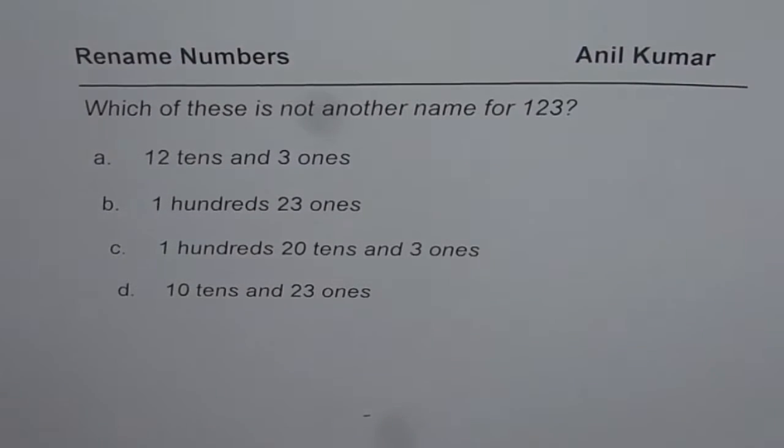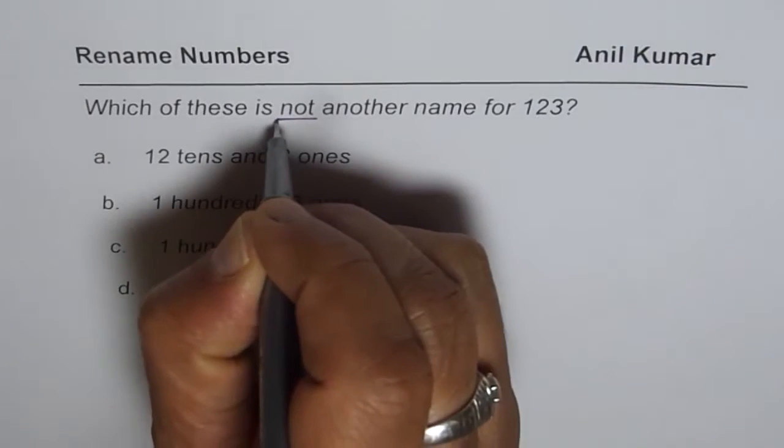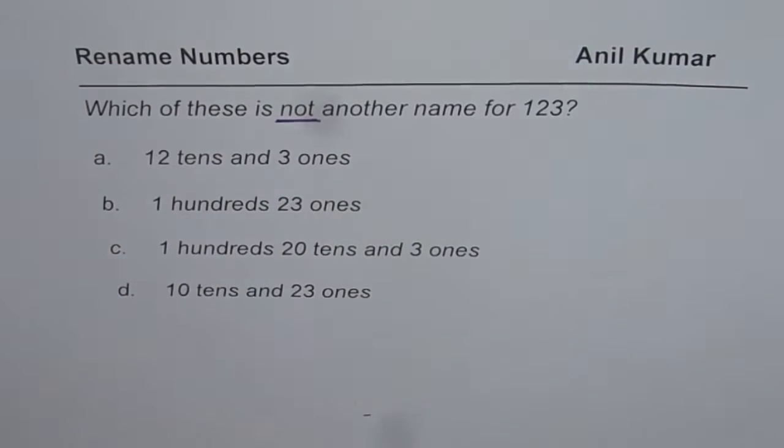So we are given 4 choices. Remember, we are saying which of these is not, right? So 3 of them are same as 123, but 1 is not. You need to find that one.